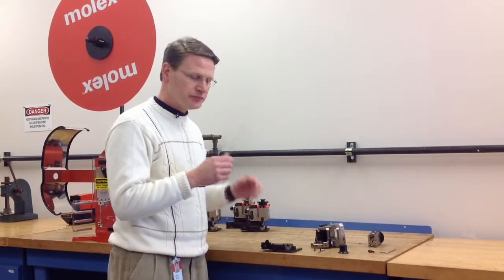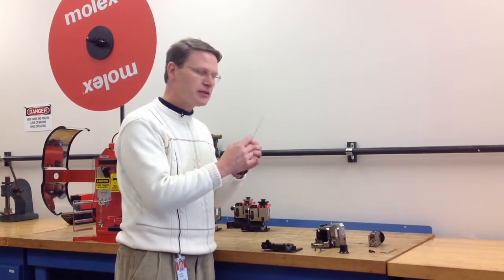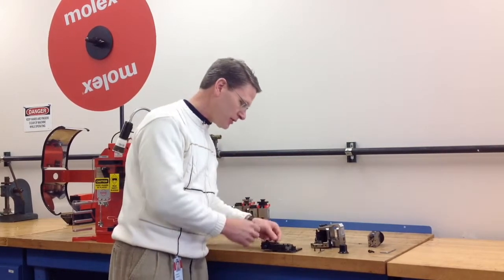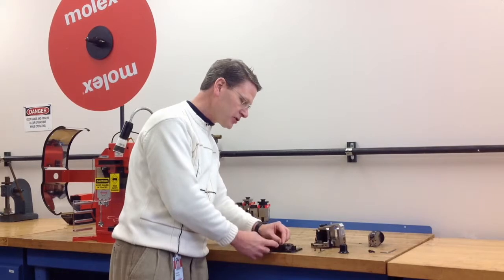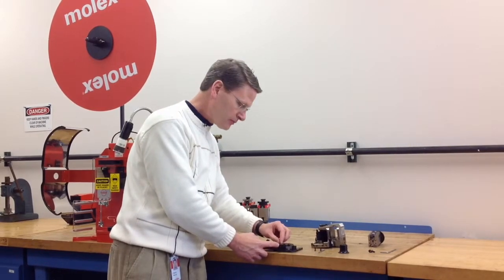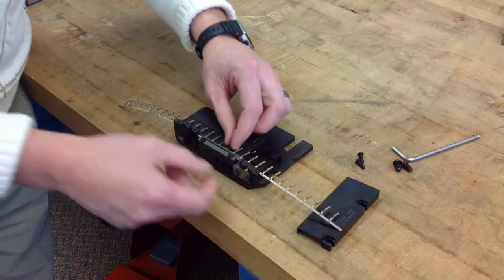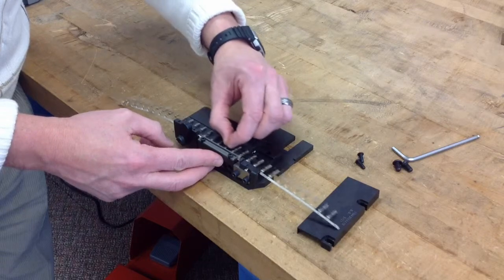First take your strip terminals and line this edge of the carrier strip up against the shoulder in the track where my finger is. You can slide it back and forth and make sure it's securely positioned there, up against the shoulder.